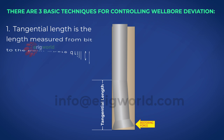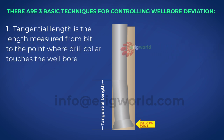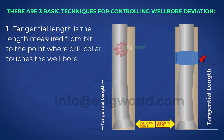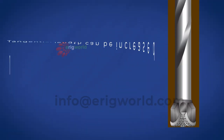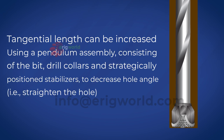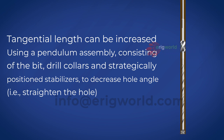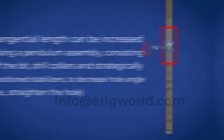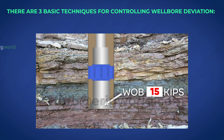Technique 1: Tangential length is the length measured from the bit to the point where the drill collar touches the wellbore. If the tangential length is increased, this decreases the bit angle and as a result the bit drills a straight well. Tangential length can be increased using a pendulum assembly consisting of the bit, drill collars, and strategically positioned stabilizers to decrease hole angle or straighten the hole. As shown, when using a pendulum assembly, even under higher weight on bit the drill string angles are very small, allowing drilling with higher weight on hard formations to achieve greater ROP.